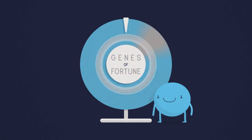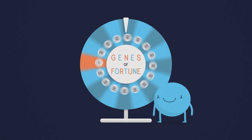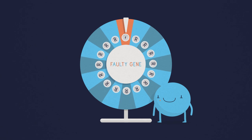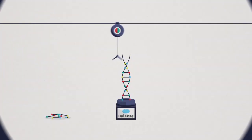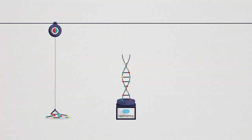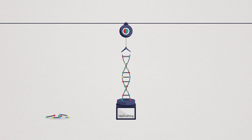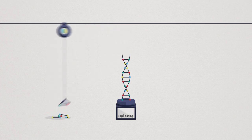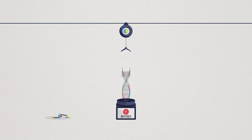Faulty genes occur commonly simply through chance. They have to occur in one individual for the first time at some stage. They are not related to anything a parent could have caused or prevented in any way. They occur because the process that replicates and divides our genes so we can pass them on to the next generation is complex and mistakes occur.